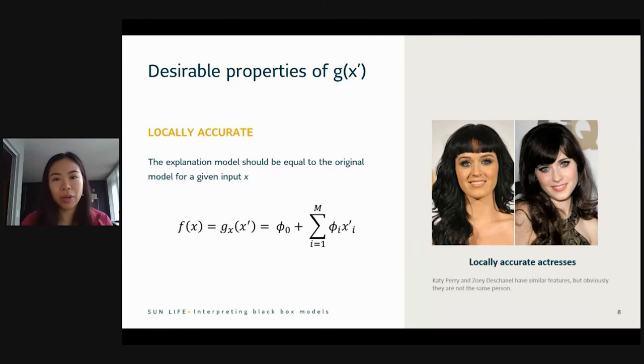The second property is what I call locally accurate. And I mentioned it briefly earlier. We want the function g of x to be locally approximate to f of x at a certain point. So for example, if you're familiar with Katy Perry and Zooey Deschanel, Katy Perry is a singer, Zooey Deschanel is an actress. They look similar in certain aspects, maybe their eyes, their nose, but overall, they are not the same person. So for g of x, this explanatory model, we want it to be locally similar to f of x at certain points, but it doesn't have to be the same across the entire function.